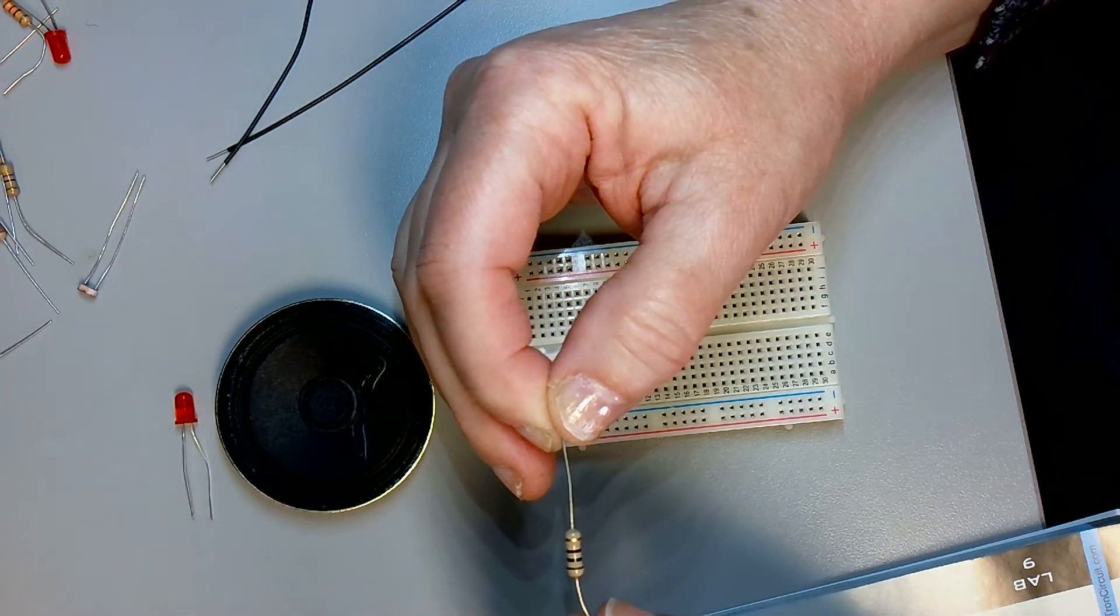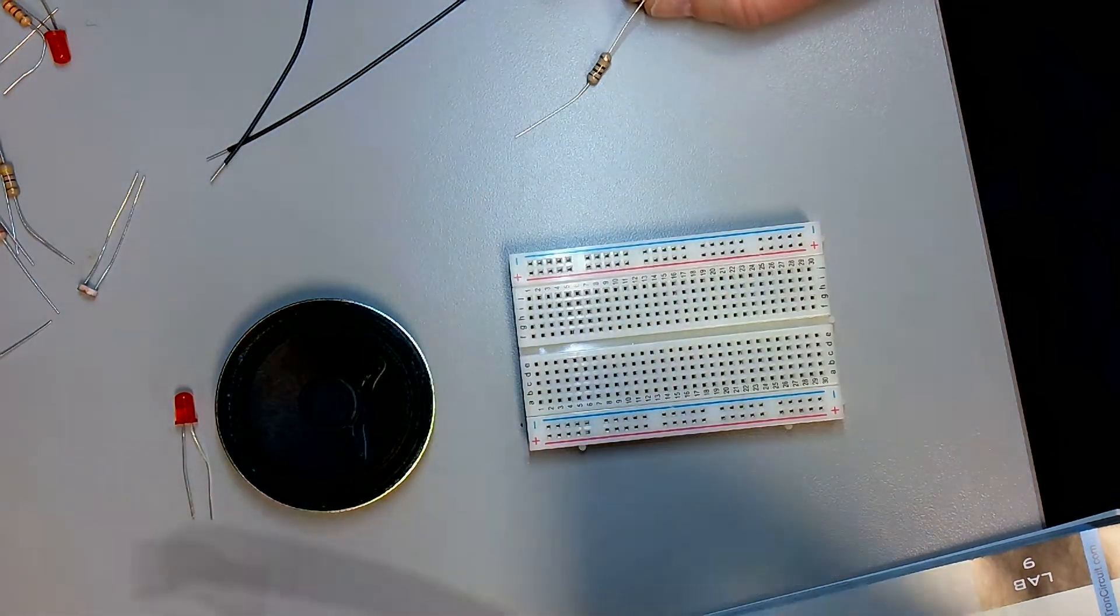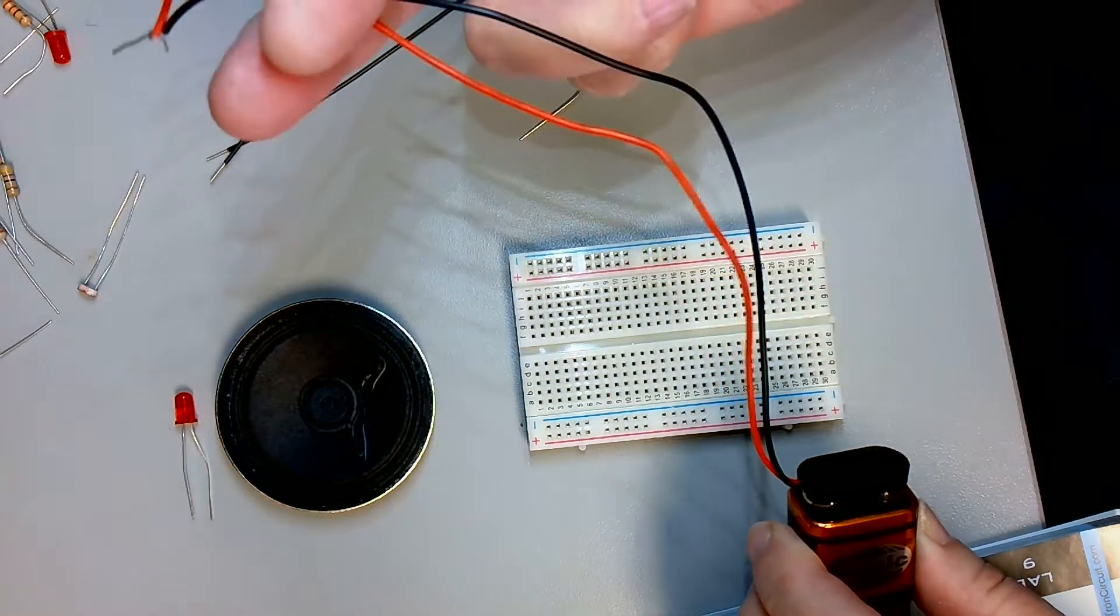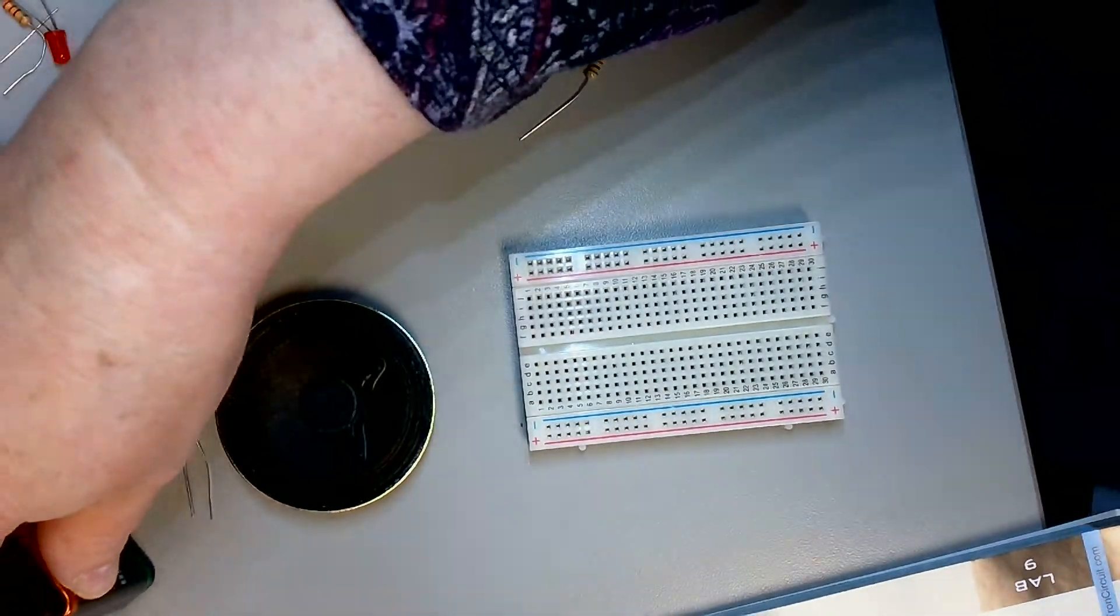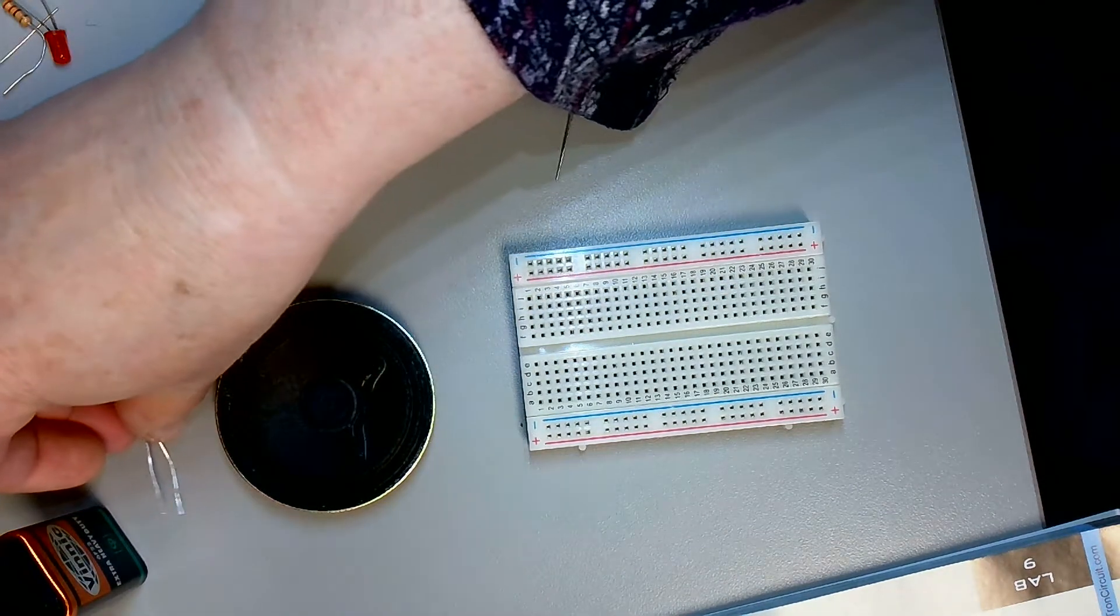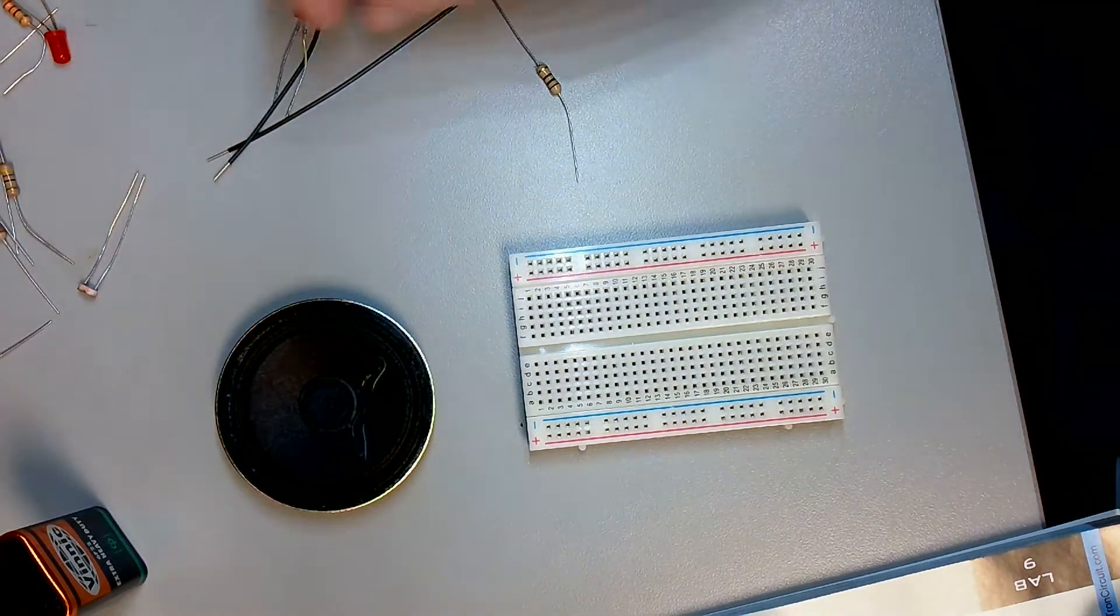Okay, so you can see the resistor, and then of course our battery. This one will be fairly straightforward to create. Don't need the LED, I'll move that out of the way.